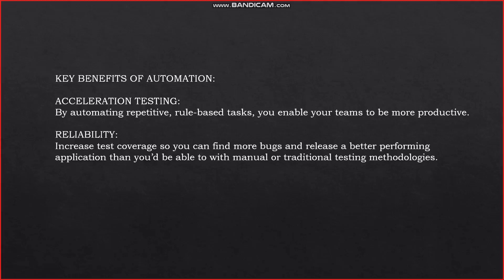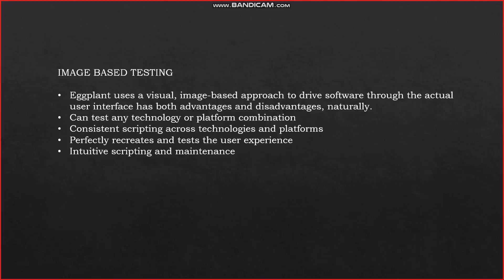Reliability: increase test coverage so you can find more bugs and release a better-performing application than you would with manual or traditional testing methodologies. Image-based testing: Eggplant uses a visual, image-based approach to drive software through the actual user interface, which is both advantageous and disadvantageous. The biggest hurdle is that you must script each step of user interaction. People perform complex actions involving many steps without being aware of each individual step, and consistent scripting across technologies and platforms introduces scripting and maintenance overhead.